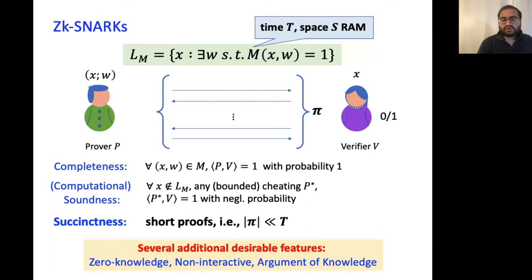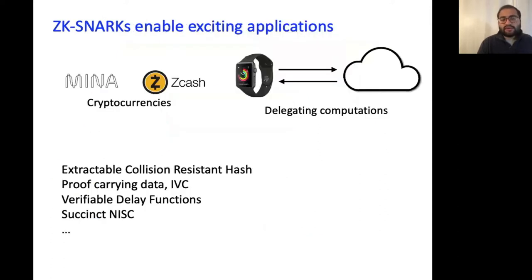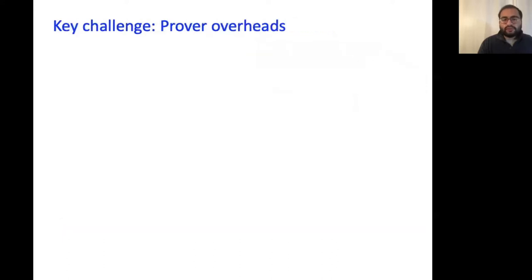Zero-knowledge SNARKs, or ZK-SNARKs for short, which are the focus of this work, are succinct arguments which additionally have properties like zero-knowledge and non-interactivity. ZK-SNARKs enable exciting applications like delegating computations to the cloud, cryptocurrencies with properties like succinctness, privacy, and a number of theoretically and practically relevant cryptographic protocols. The key challenge in scaling general-purpose ZK-SNARKs is the high computational complexity of generating proof strings, which has been the focus of recent research.